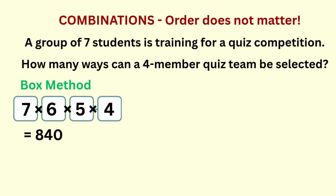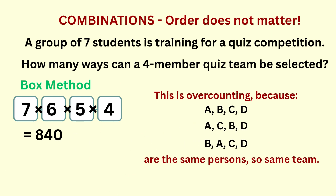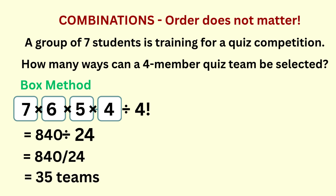But since order doesn't matter, we've over-counted. Any 4 persons selected from the group has 4 factorial permutations included in the 840 teams. For example, persons A, B, C, D can be arranged as A, C, B, D or B, A, C, D, and so on — all included in the 840 teams. Although these are different permutations in terms of order, they are the same combination of students, so the same team. To correct this over-counting, we divide by 4 factorial, which is 24. So the number of unique 4-member quiz teams from 7 students is 840 over 24, which is 35.